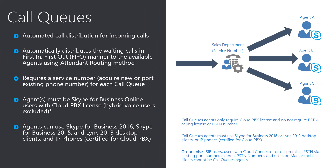Call queues provide a hunt-group solution for a Cloud PBX implementation. It currently implements the attendant routing method only, whereby incoming calls are automatically distributed on a first-in-first-out basis to all available agents. Similar to auto-attendance, a service number is required to implement call queues. When a call queue is sitting behind auto-attendance — for example, press 1 for sales — the agents for the sales team are handled by the sales call queue, and in this case the number used by the sales call queue will not be important. Thus, a new service number can be obtained from Skype for Business Online for this purpose. However, if the existing hunt-group phone number is published externally and needs to be retained upon migration to call queue, then number porting must be involved as part of the planning process.